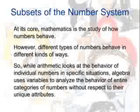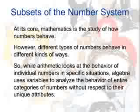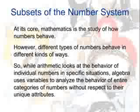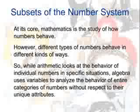At its core, mathematics is the study of how numbers behave. However, different types of numbers behave in different kinds of ways. So, while arithmetic looks at the behavior of individual numbers in specific situations, algebra uses variables to analyze the behavior of entire categories of numbers without respect to their unique attributes.